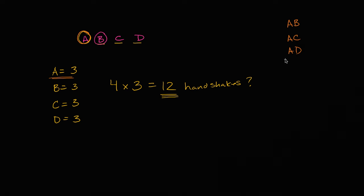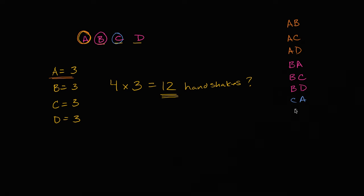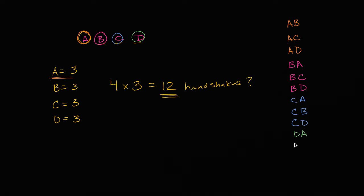We're then saying that B is going to shake A's hand, B is going to shake C's hand, and B is going to shake D's hand. Then we have C: C is going to shake A, C is going to shake B, C is going to shake D. And then D is going to shake A's hand, D is going to shake B's hand, and D is going to shake C's hand. And you're probably saying: well, that's exactly 12 things listed.